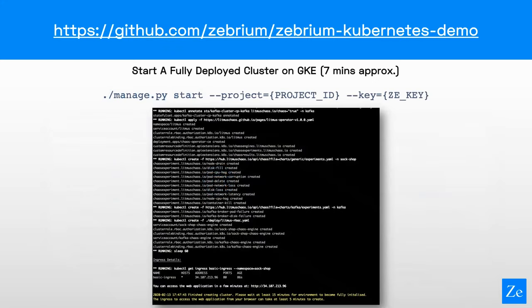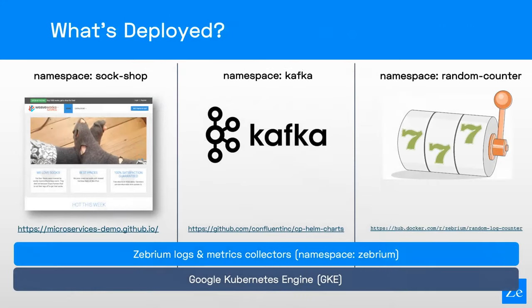We built this demo environment and you can find the whole GitHub repo at the URL shown. You can clone it and run it — there'll be a blog coming out shortly with more details. It's basically a Python script with a few commands. To spin up the entire cluster takes about seven minutes using the start command. It runs on Google Cloud, so you need a Google Cloud account and a Zebrium account. It will spin up a GKE cluster on Google Cloud in the project you specify, with your Zebrium key passed in so we can start sending data to your Zebrium account, which is a free account you can get started with in a few minutes.